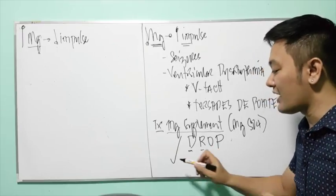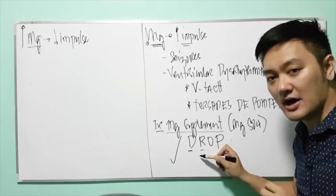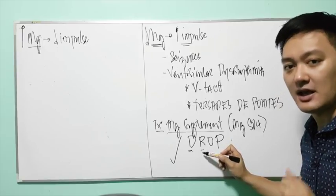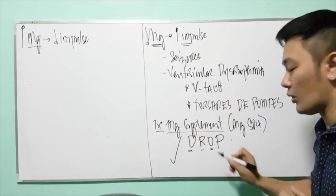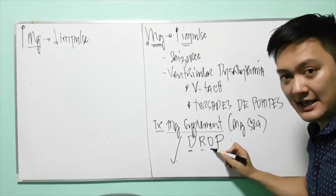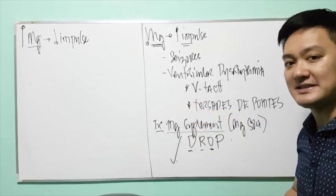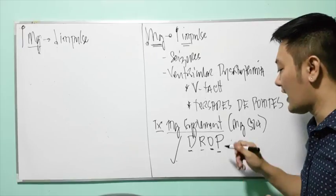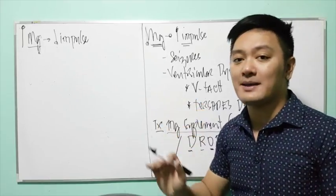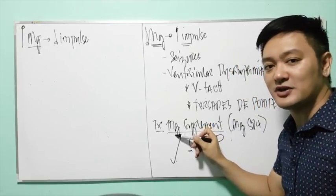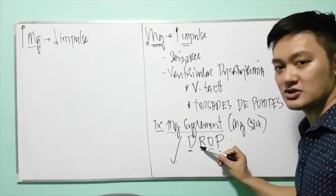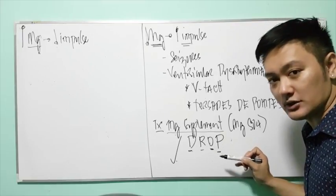A depression in respiration or depressed respiratory rate also means magnesium toxicity. O — check the urine output, because oliguria is an indication of magnesium toxicity. P stands for pressure: hypotension, a decrease in blood pressure, is also an indication of magnesium toxicity or hypermagnesemia. So before giving magnesium supplement, always check DROP.